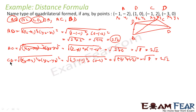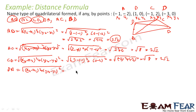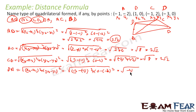Let us find DA. The distance between D and A is root of (x4 minus x1) squared plus (y4 minus y1) squared. x4 is minus 3 and x1 is minus 1, y4 is 0 and y1 is minus 2. That is root of (minus 2) squared plus (2) squared, which is root of 4 plus 4, that is root 8, that is 2 root 2. So I have got all 4 sides.